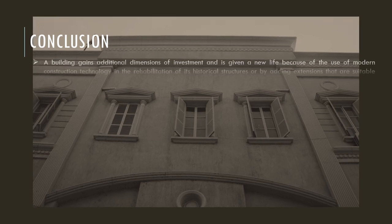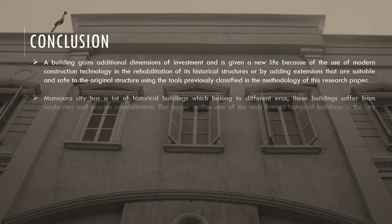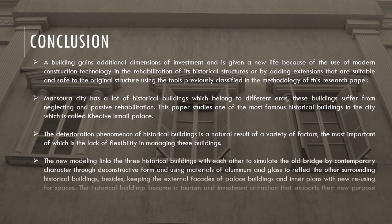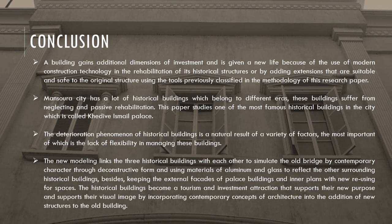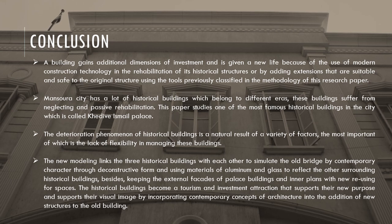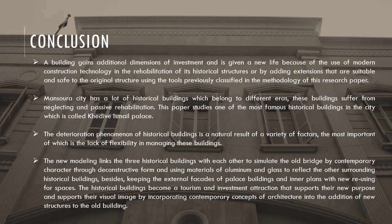A building gains additional dimensions of investment and is given new life through the use of modern construction technology and rehabilitation of its historical structures, or by adding extensions that are suitable and safe to the original structure. Mansoura City has many historical buildings which suffer from neglect and passive rehabilitation. The new modeling links the three historical buildings to simulate the old bridge using deconstructive form with aluminum and glass materials, keeping external facades and inner plans with new spatial reuse, making the historical buildings a tourism and investment attraction by incorporating contemporary concepts into new structures added to the old building.